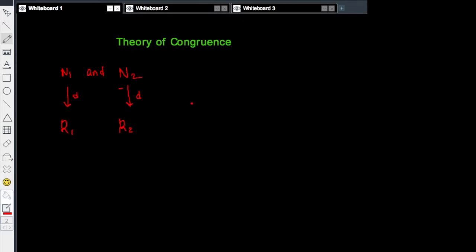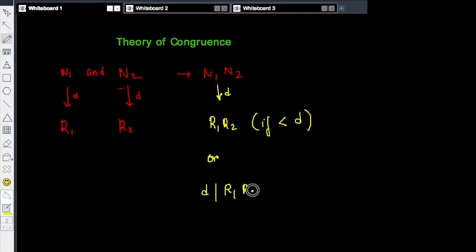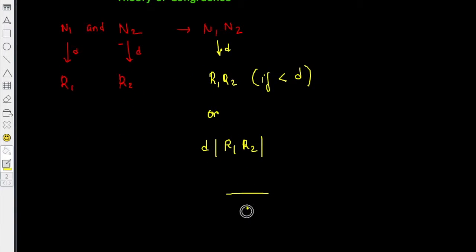Then a very interesting thing happens when I multiply n1 and n2. If I multiply n1 and n2 and divide this product by d again, my remainder is either r1 times r2 if r1 times r2 is less than d, or if r1 times r2 is greater than d, then we divide r1 times r2 by d again to get the final remainder r3.